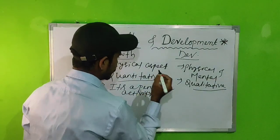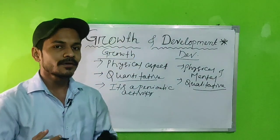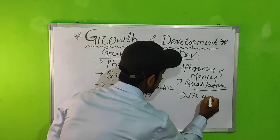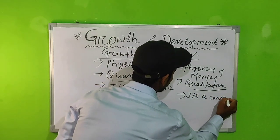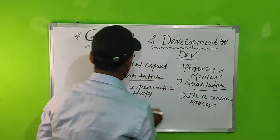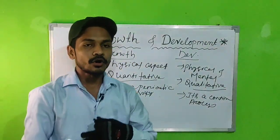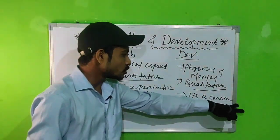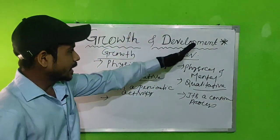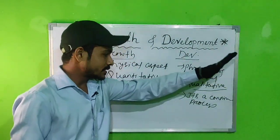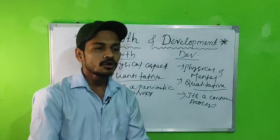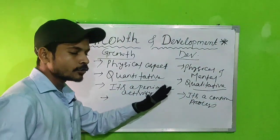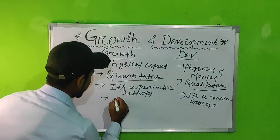Development is a continual process — a lifelong process. Growth is a periodic activity. Why is development called a continuous process? Because it continues throughout life — it starts from the womb and ends at the tomb. Growth, on the other hand, will stop whenever maturity comes.